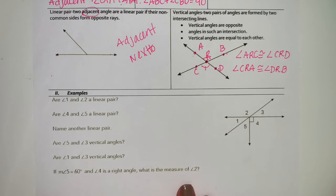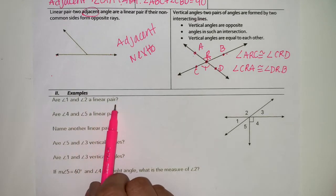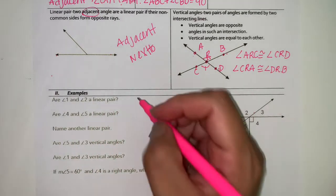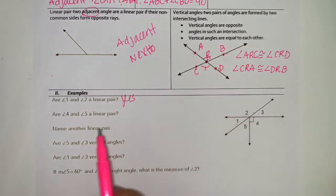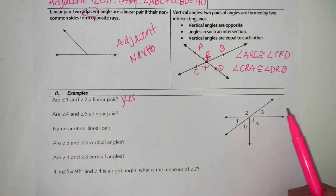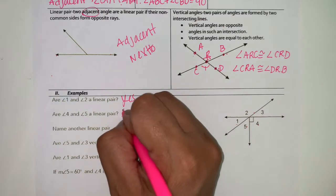It says are angles one and two a linear pair? So angles one and two, they're next to each other, that's going to be yes. Are four and five a linear pair? They're next to each other, but they don't form 180 degrees, so that's going to be no.